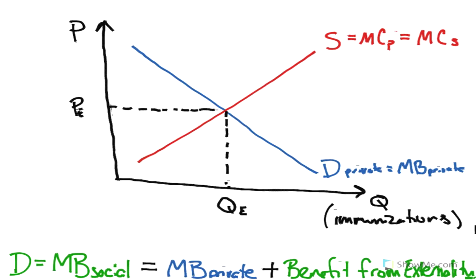So here we have the private market for immunizations. And like we talked about, immunizations have a positive externality associated with them. So there's going to be another demand curve that reflects the social marginal benefit that lies above the private marginal benefit curve.